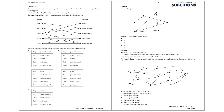Question 3. The sport of basketball has 5 player positions: center, power forward, small forward, point guard, and shooting guard. 5 friends — Eng, Ben, Charlie, Doris, and Esther — play together in a team. The bipartite graph below shows which positions each of the 5 friends can play. Based on the bipartite graph, which one of the following allocations is not possible?